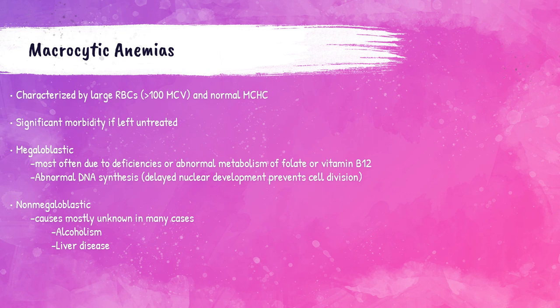Patients will also have typical anemia symptoms — fatigue, weakness, and paleness — in conjunction with those macrocytes. Both megaloblastic and non-megaloblastic anemias have macrocytic red blood cells. Megaloblastic anemias are due to defective DNA synthesis, most often due to deficiencies or abnormal metabolism of vitamin B12 and folate. Non-megaloblastic anemias are caused by things like alcoholism and liver disease.